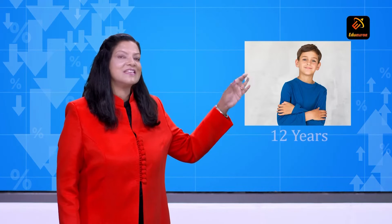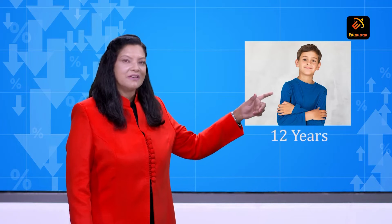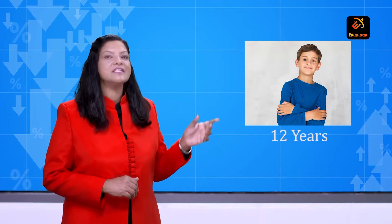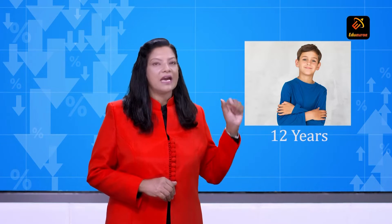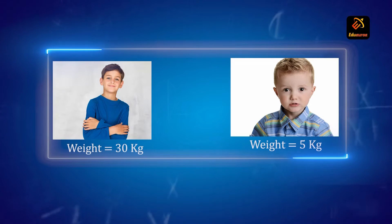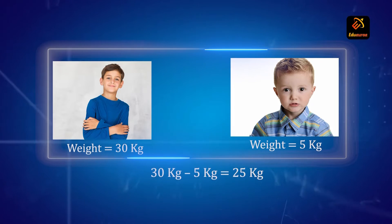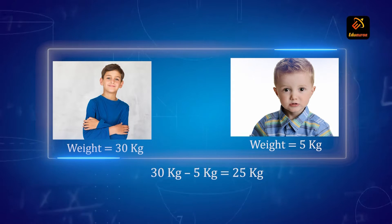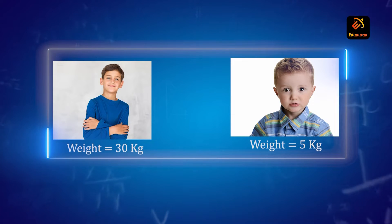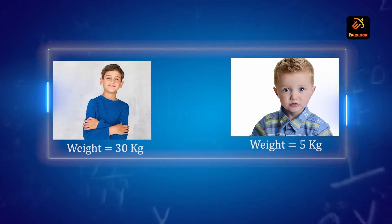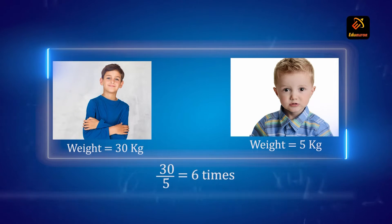This is Rohan. He is 12 years old now. You can see his photograph and also one more childhood photograph when he was just 3 years old. At that time his weight was only 5 kg and now his weight is 30 kg. We can compare these two weights in two ways: his present weight is 30 minus 5, equal to 25 kg more now; or we can divide — 30 upon 5 — that is 6 times more. Comparing two quantities by the second way is more convenient, and this comparison gives rise to the ratio.